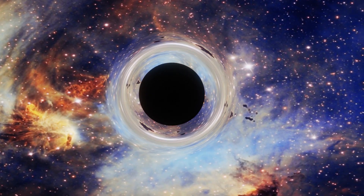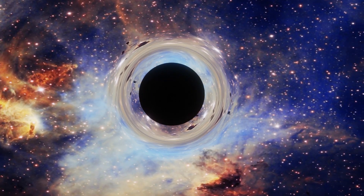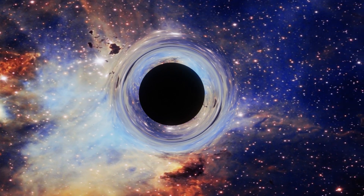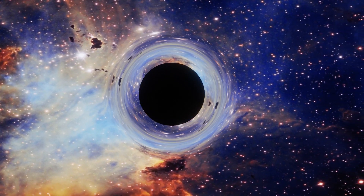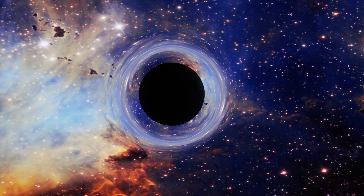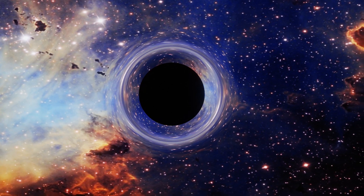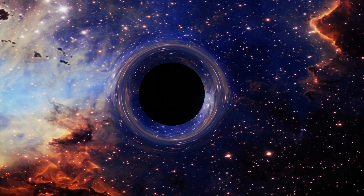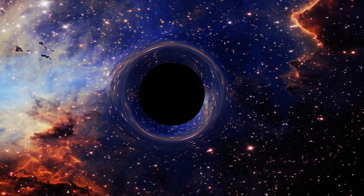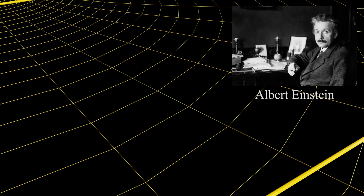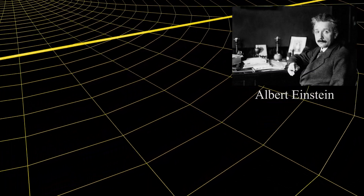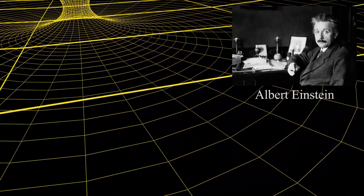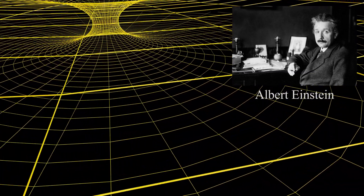The sphere that defines the boundary of the black hole is known as its event horizon. The existence of black holes was predicted by Einstein's theory of gravity, general relativity, which was published in November 1915 during the First World War.